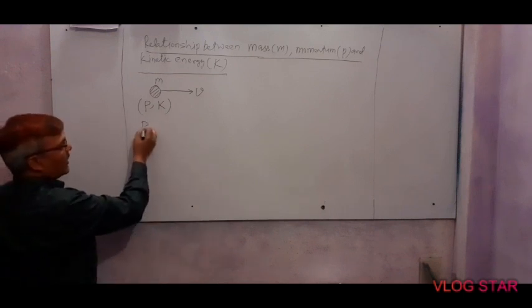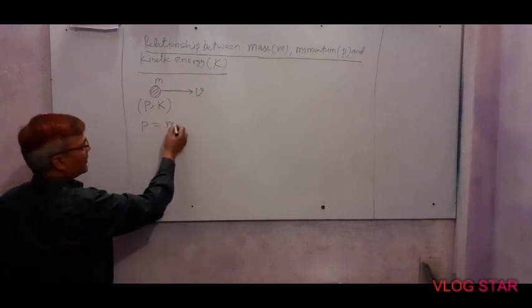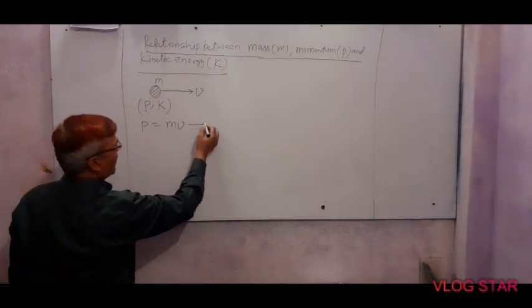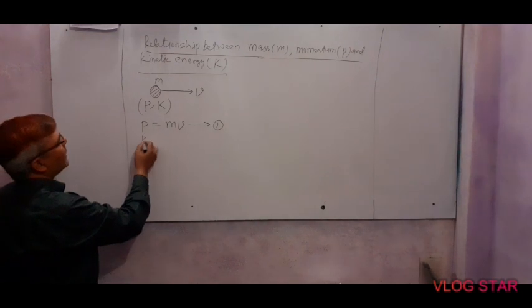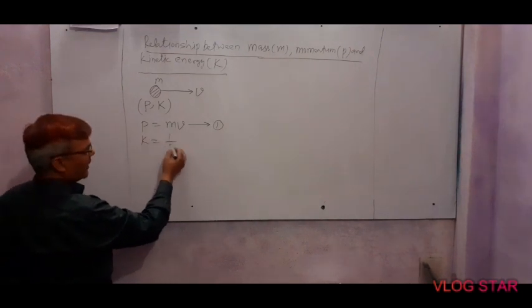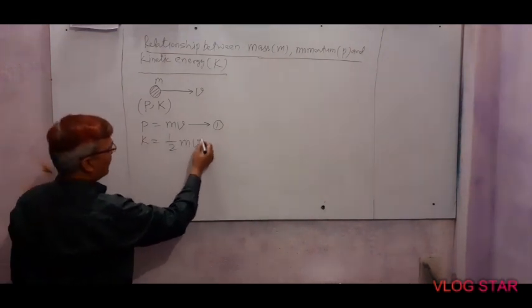We know that momentum is given as the product of mass and velocity, p equals mv. And kinetic energy is given as k equals half mv squared.